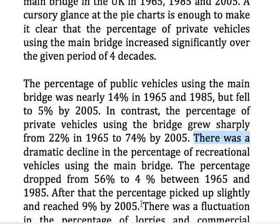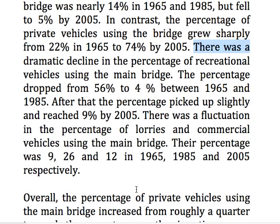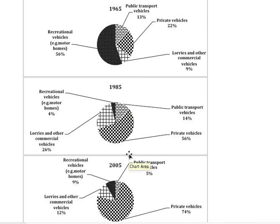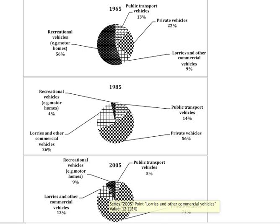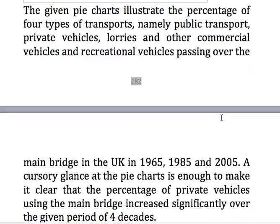After that the percentage picked up slightly and reached 9% by 2005. There was a fluctuation in the percentage of lorries and commercial vehicles using the main bridge. The percentage was 9%, 26%, and 12% in 1965, 1985, and 2005 respectively — it goes up and then goes down, so that is a fluctuation.